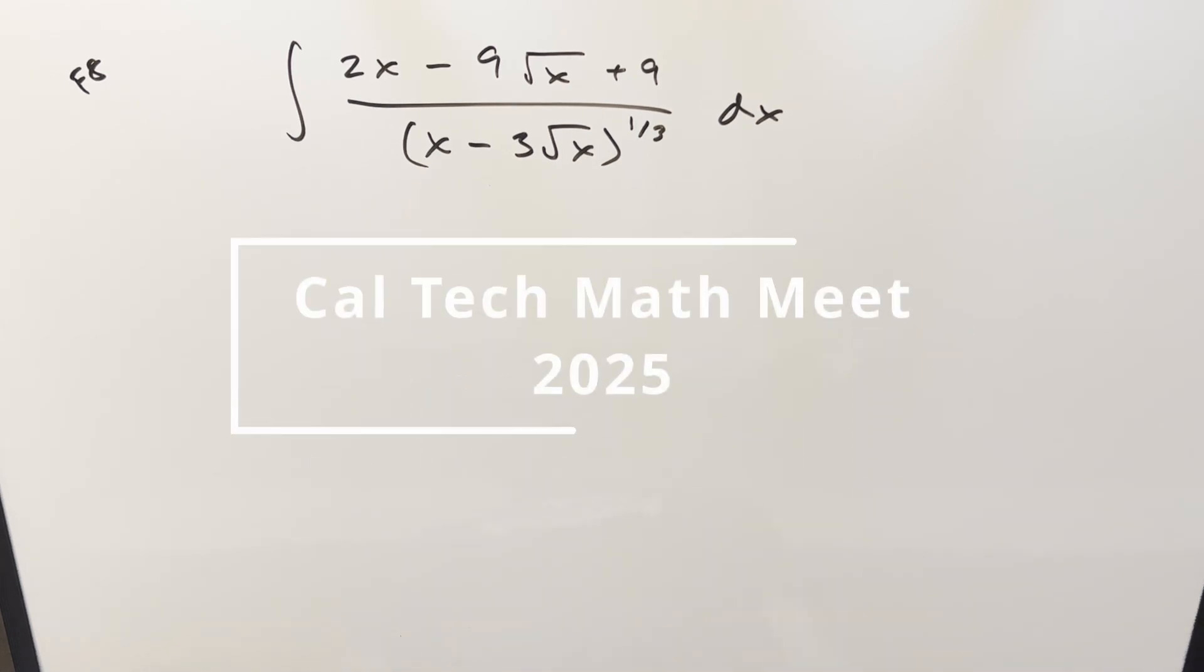Okay, we have another interesting integral here from the Caltech MathMe 2025 finals number 8. We have the integral of 2x minus 9 square root of x plus 9 over x minus 3 square root of x to the 1/3 dx.